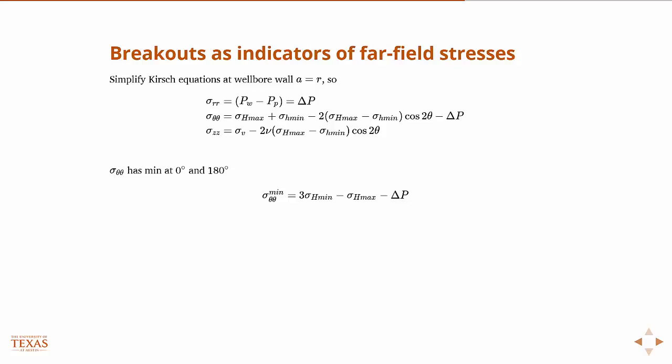Theta will be minimal at zero and 180, because cosine 2θ is minimal at zero and 180. And so then the minimum hoop stress equation simplifies to this. Likewise, it's maximal at 90 and 270. So the maximum hoop stress is this.